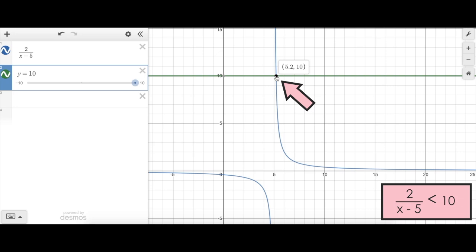So I know these two functions intersect at 5.2, 10. But when is 2 over x minus 5, the blue function, less than 10? Just looking at the graph, you should be able to see that the blue function is below the green line, y equals 10, pretty much everywhere.